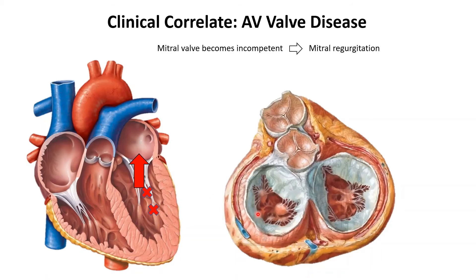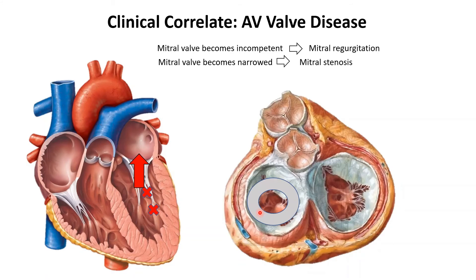Another situation that can happen is if the mitral valve were to become narrowed — this would produce a situation called mitral stenosis. This would result in very little blood reaching the ventricle and the rest of the body, and would also produce an abnormal sound on auscultation.